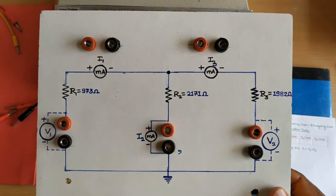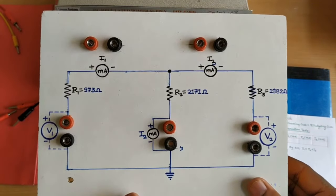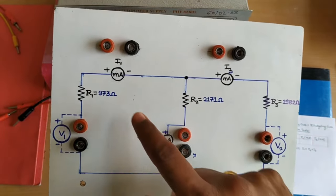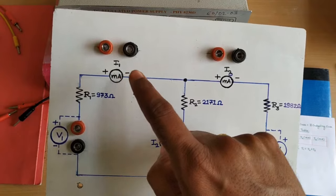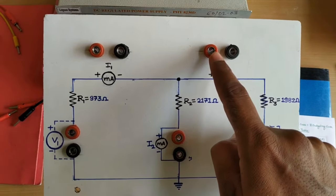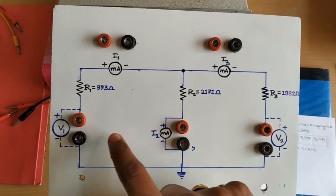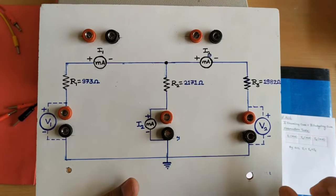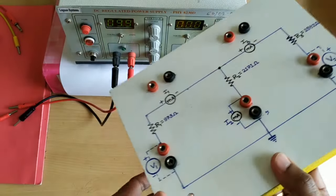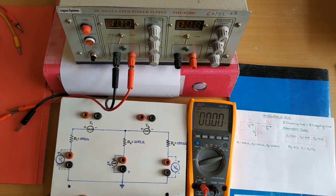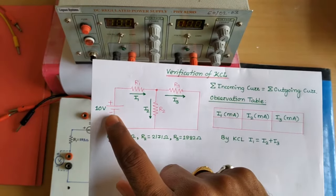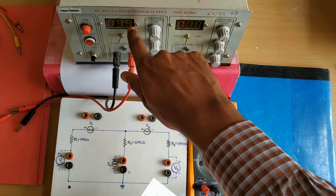We are using this experimental board — I have performed a number of experiments using it and the links are available in the description. The T-type network uses R1, R2, and R3. Connectors allow us to externally connect ammeters. The board has two loops so we can apply two voltages, but our circuit diagram needs only one voltage source. Resistances of the desired values are already soldered on the back. For power we use a DC regulated power supply set to 10 volts.